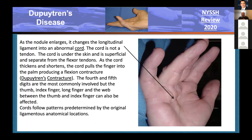The nodule enlarges and changes the longitudinal ligament into a cord. The cord is not a tendon—it is under the skin and superficial to the flexor tendons. The cord thickens, shortens, and pulls the finger into the classic flexion contracture. The fourth and fifth digits are more commonly involved. The thumb, index, and long finger are less commonly involved but definitely have the disease in certain patients. The web and thumb are also involved occasionally.